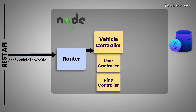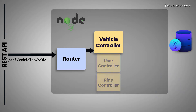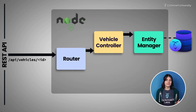Controllers validate the request, manipulate the data, and send it back. In enterprise-level applications, the business logic is often separated from the controller into another layer — a service layer. Controllers interact with CockroachDB through Entity Manager, which is configured to connect to your cluster. In this example, it connects to the Mover database.